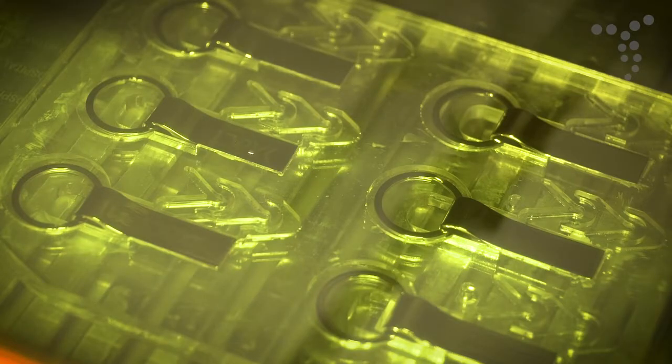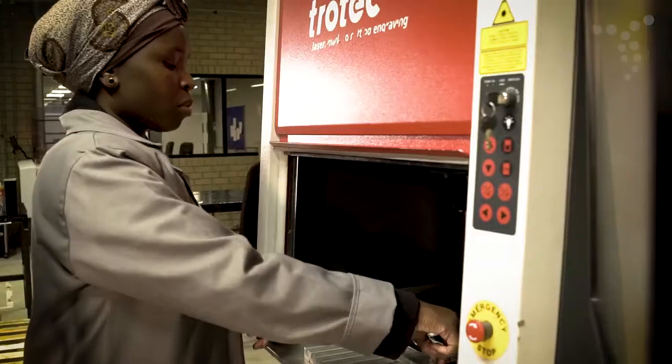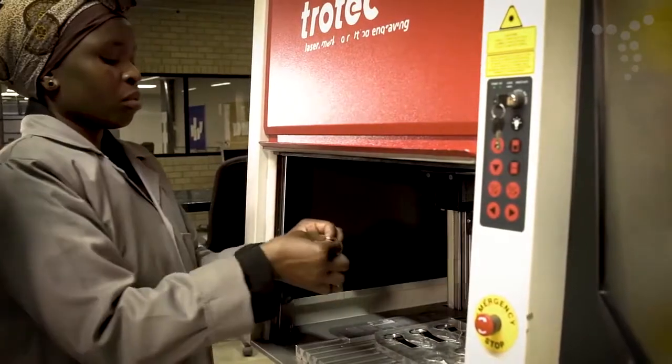The laser burns the top layer of the product off and reveals the layer beneath. If the layer beneath is a different color to the top layer when engraved, the bottom layer's color is exposed.